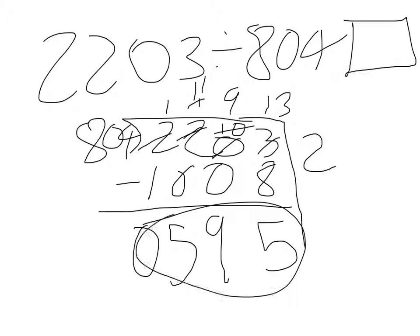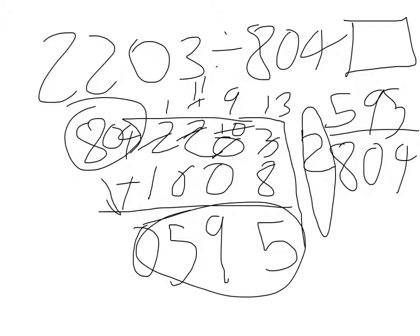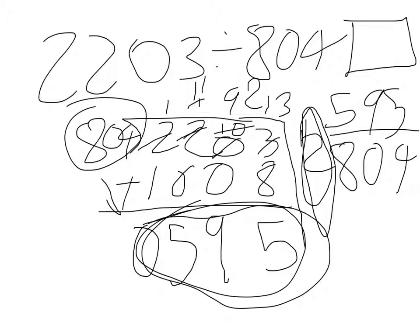Now I am left with 595. Because 804 doesn't fit into 595, 804 is greater than the 595 that we have. We have 595 parts of 804. The number I used to multiply with 804 is only 2, right here. And 2 will be over here for the answer. It's not just 2, because I also have 595 remainders — 595 out of 804.